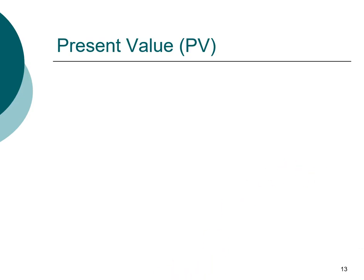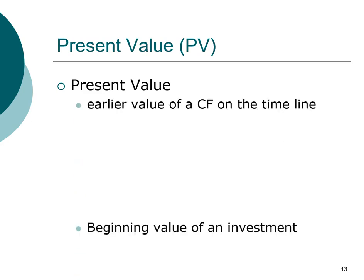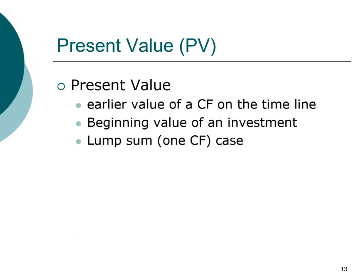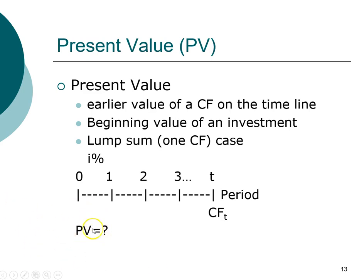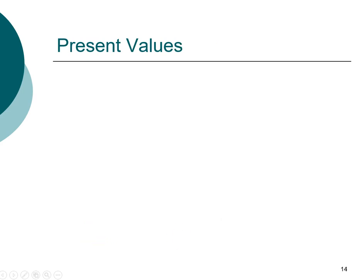Welcome back. Present value refers to the earlier value on the timeline, so oftentimes this is at the beginning of the investment horizon. In this chapter we are working with lump sums, meaning we only have a single cash flow. You can think of it as: the present value is how much a future amount is worth today. For example, if an investment promises to pay you $100,000 in ten years, how much would that investment be worth today?